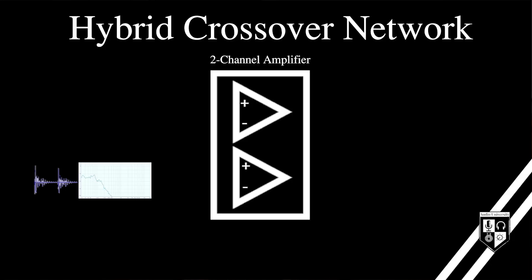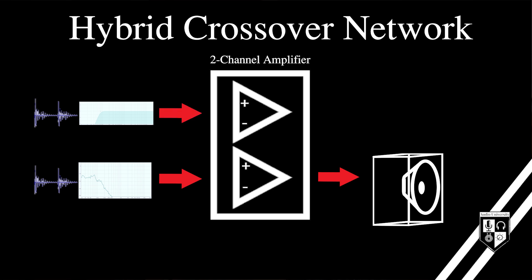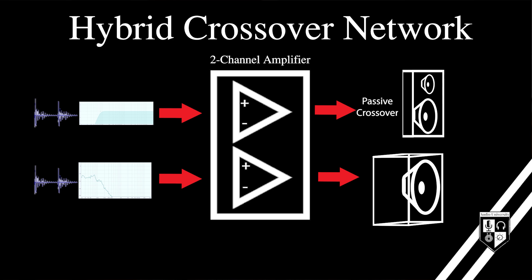It's very common to use both active and passive crossovers in the same system. For example, you could send low frequencies to amplifier channel 1 going to a self-standing subwoofer, then send mid-range and high frequencies to amplifier channel 2 going to a speaker with its own passive crossover — which then distributes the frequencies to the appropriate drivers within that cabinet.